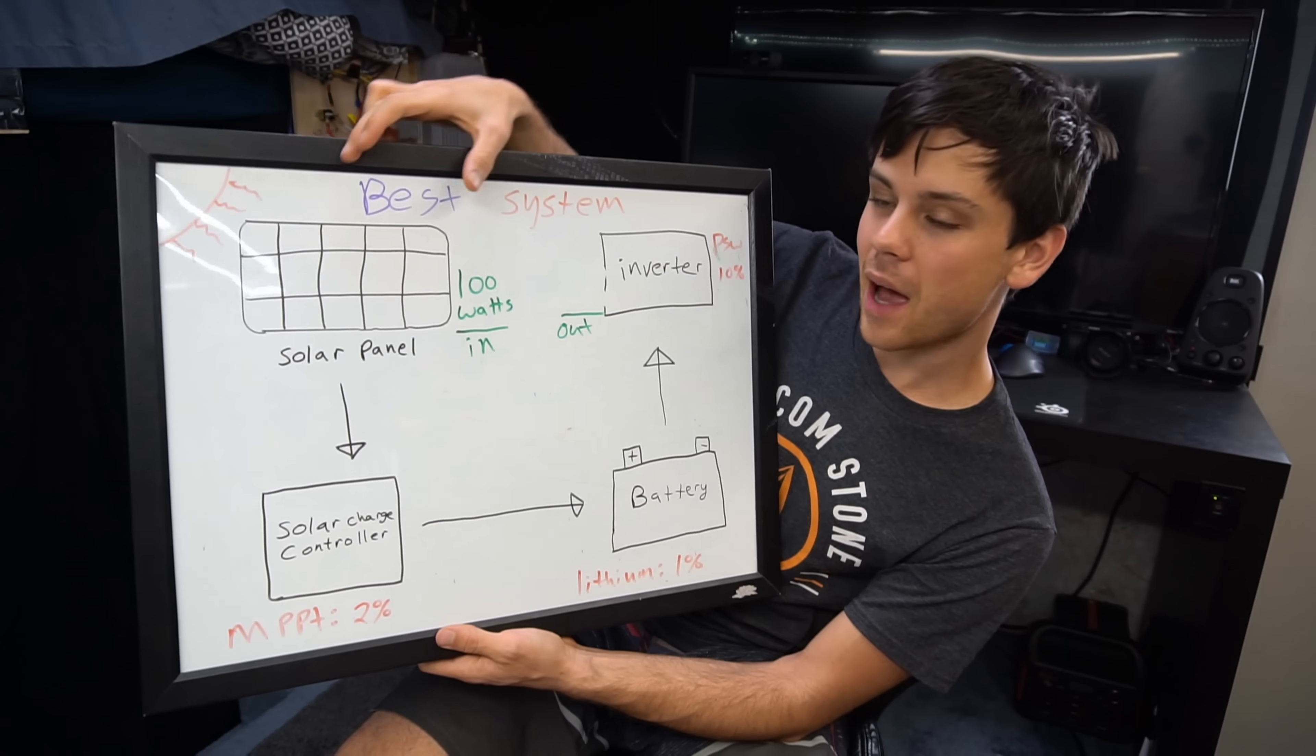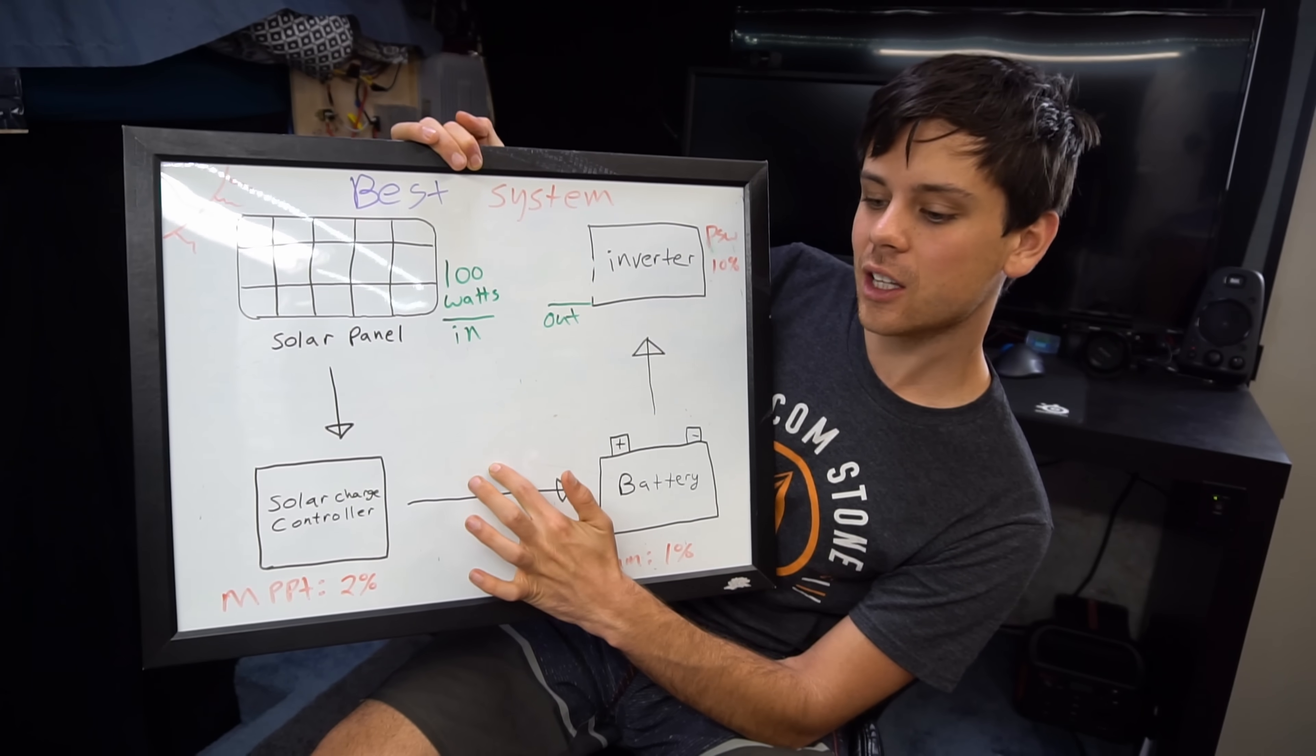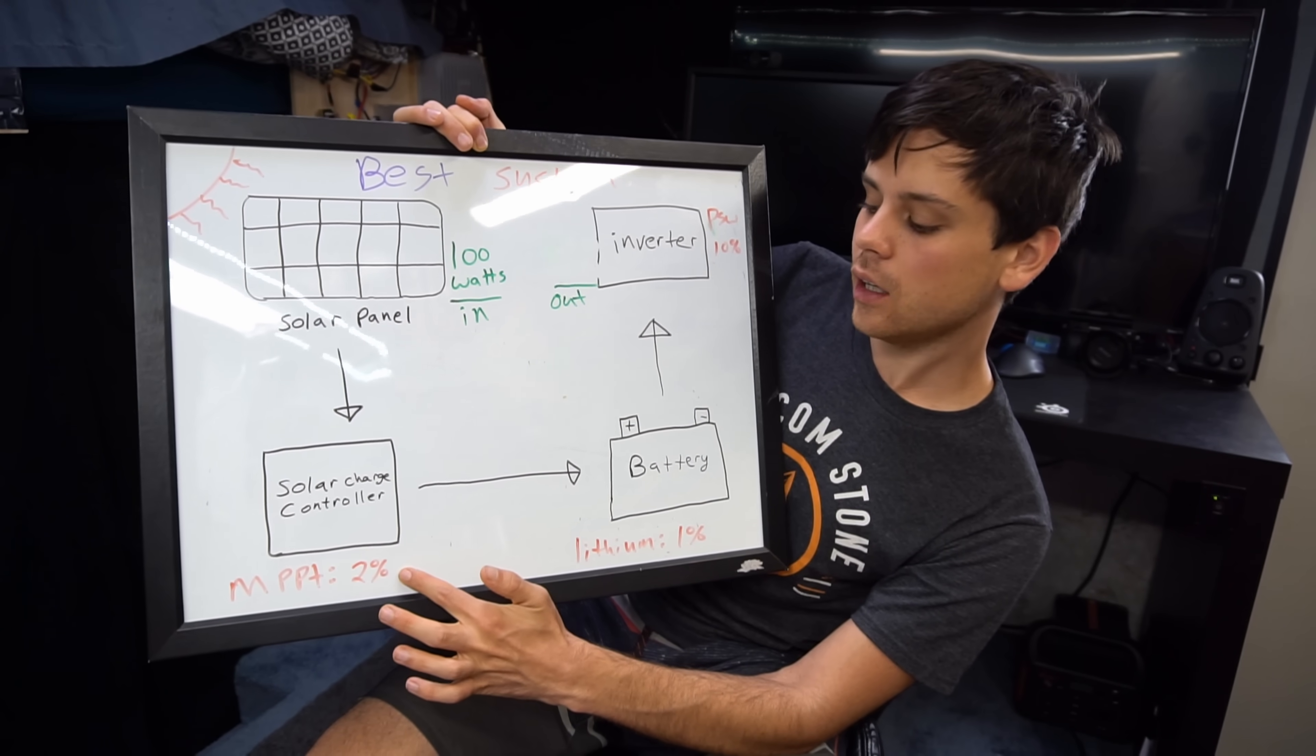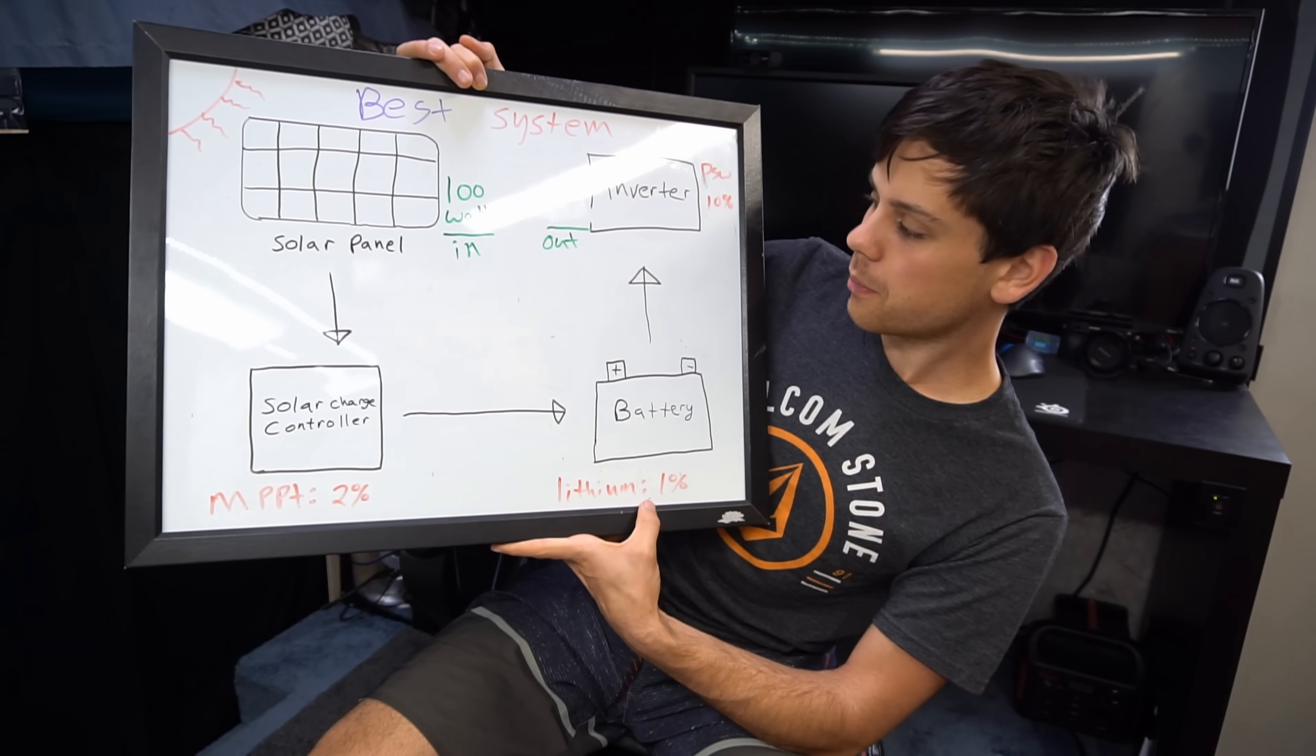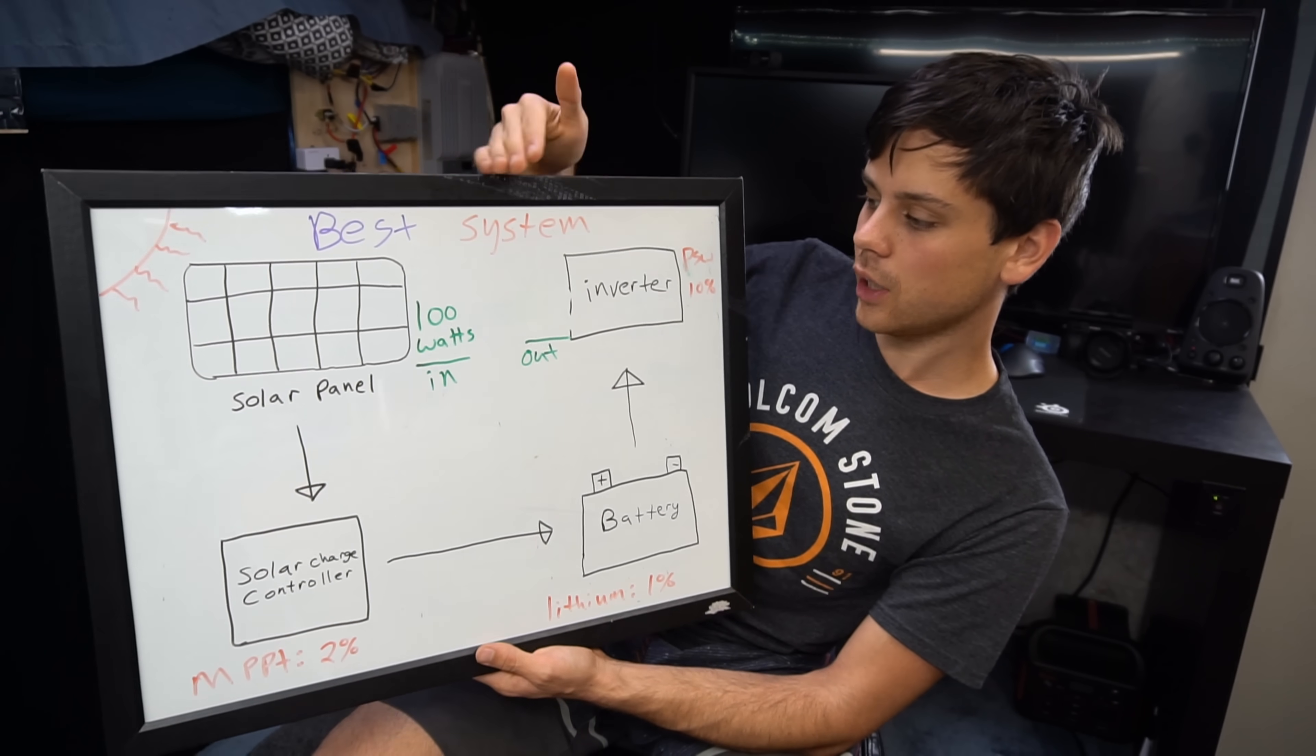So this is going to be the best system with the proper components. I'm not even going to calculate wire loss because it's less than 1 percent. It's probably less than half of a percent and then we also have an MPPT, 2 percent loss. The battery is going to be a lithium iron phosphate so it's going to be only a 1 percent loss and the inverter is going to be a pure sine wave and it's still going to incur the 10 percent loss. So let's calculate this out.